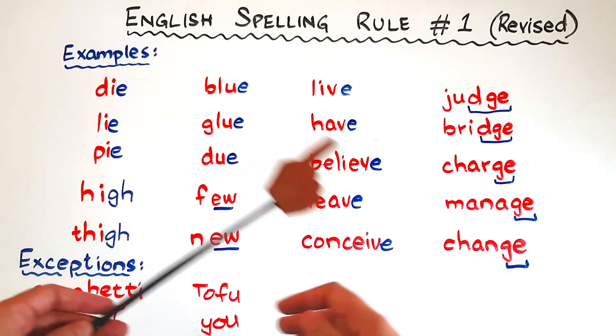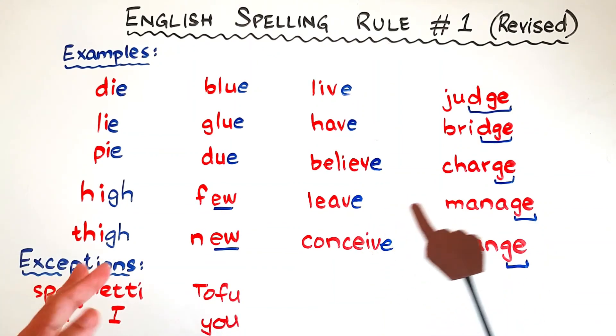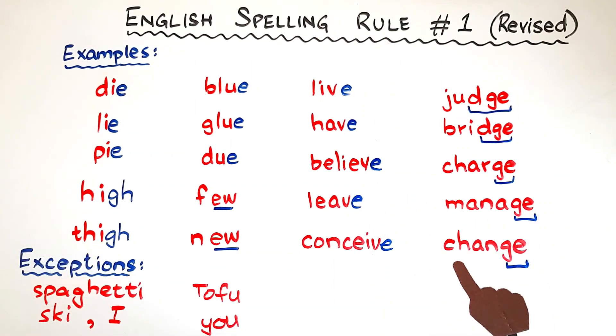Otherwise, this rule works well. For V and J, I don't know if we have any exceptions. I have never found them. So if you come across with any word that is ending in V and J, please write it down in the comment box.